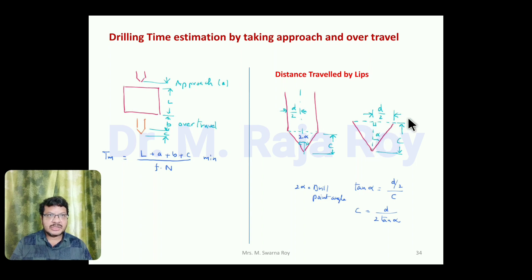Opposite side and adjacent side are available, so you can use the trigonometric relation tan α. Tan α equals opposite side D/2 divided by adjacent side C. From this you can get C value as D divided by 2 tan α.